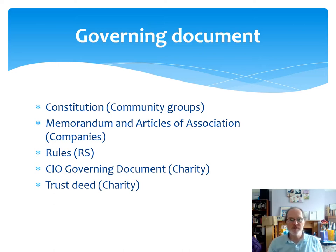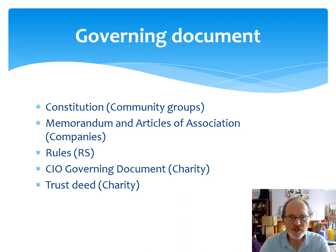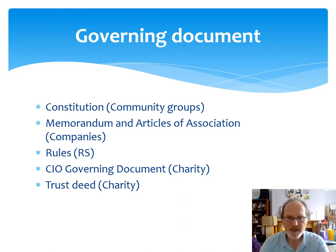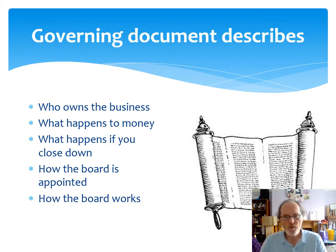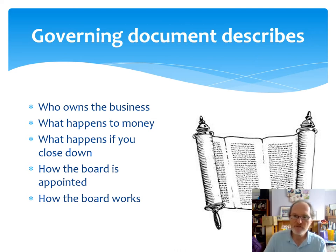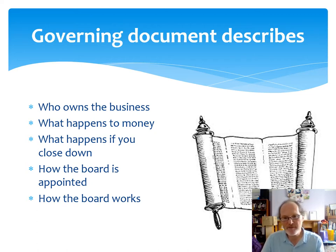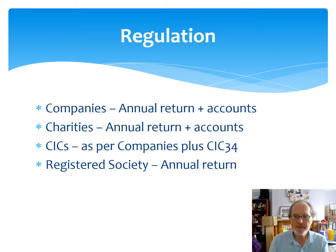For extra guidance, you can download information including a guide to being a trustee from the Charity Commission, CIC governance, and Companies House governance guidance as well. In particular the essential trustee booklet is worth downloading for people who want to become trustees of your charity. The governing document of the business can be called different things: a constitution or a set of rules if you're a community group or small business; a memorandum and articles of association for a company; a set of rules if you're a registered society or community benefit society; a governing document if you're a charity or a trust deed. This document is really important because it sets out all the key features about who owns the business, what happens to money, what happens when you shut down, where the assets might go, and how you appoint the managing board, directors, or trustees. It's often written in dense legalese but familiarizing yourself with the key principles is really important.